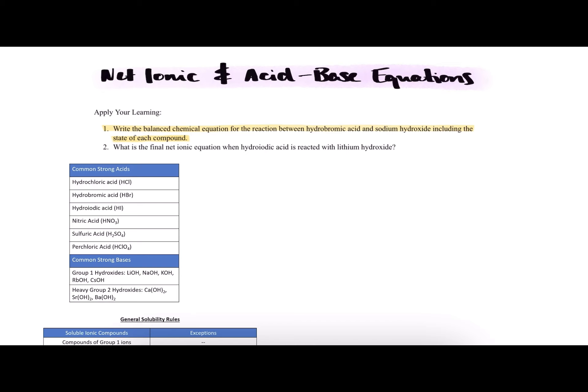Looking at the chart, we can see that the formula for hydrobromic acid is HBr, and the formula for sodium hydroxide is NaOH. So we're given the reactants of our equation, so we can go ahead and write those out.